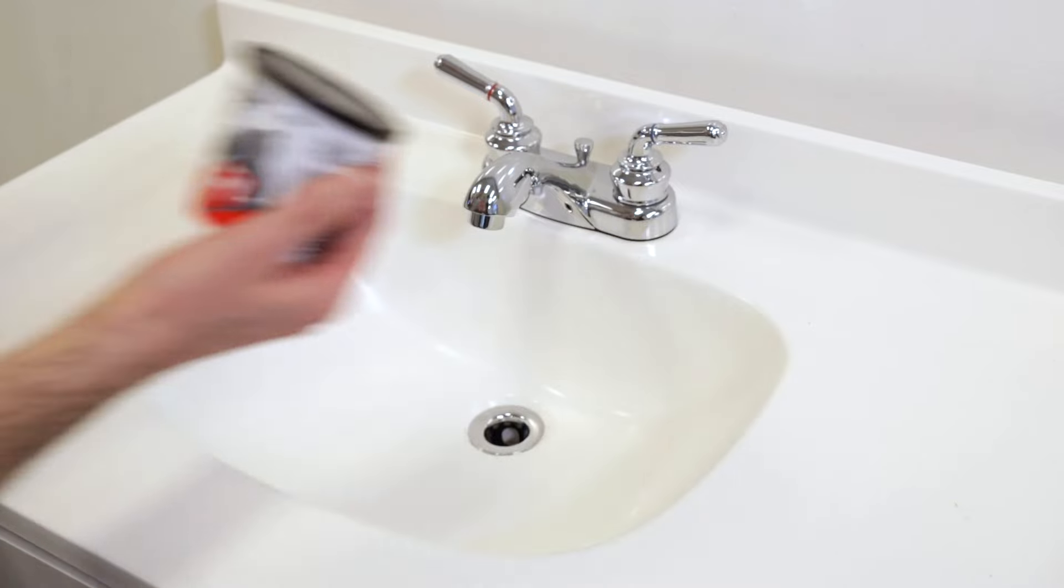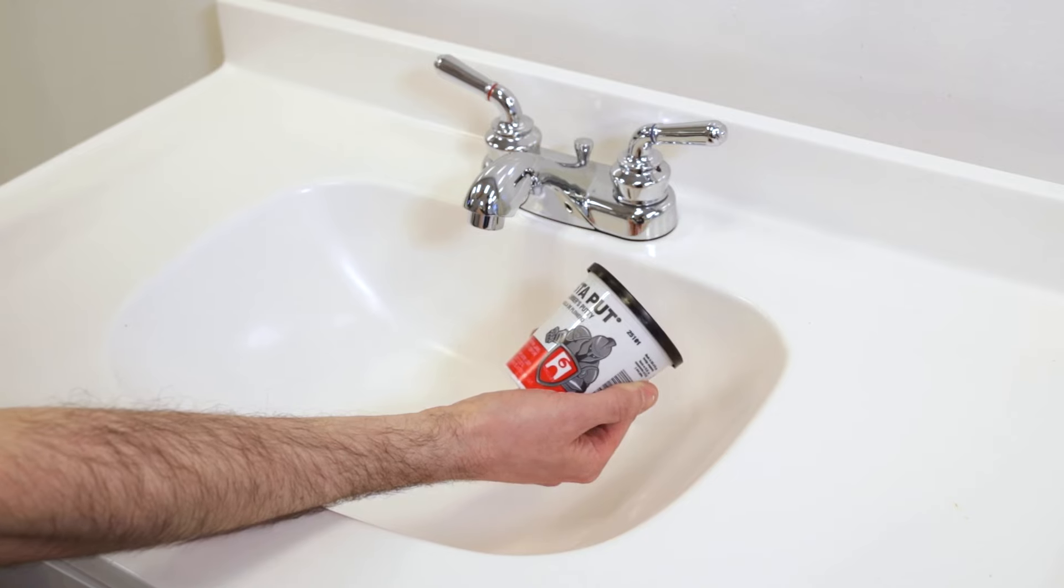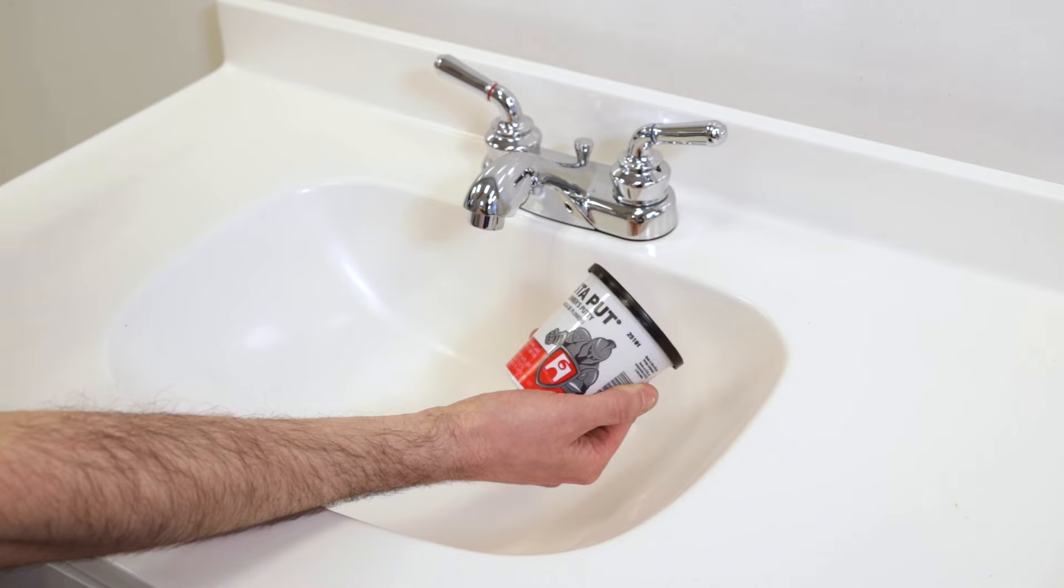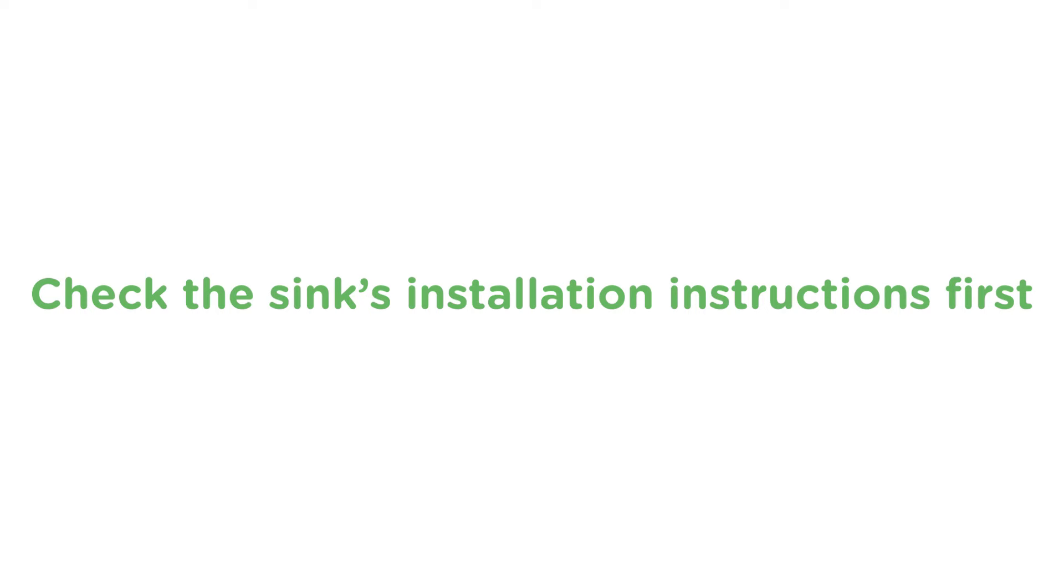The first thing that you'll need to know is what type of sealant to use on the drain collar inside the sink. Plumber's putty is the most common, but some stone materials and cultured marble sinks may stain or negatively react with putty, so the manufacturer may suggest a good quality silicone caulking instead. Check the sink's installation instructions first.